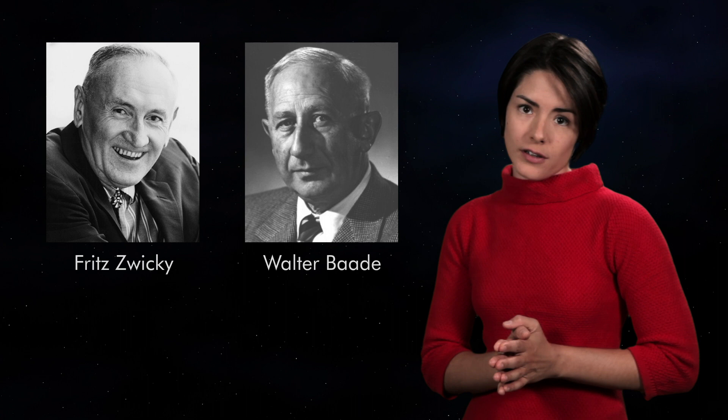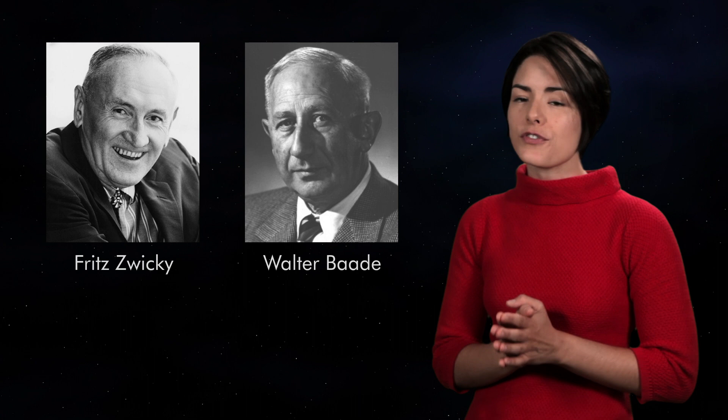Neutron stars, like the neutron, were predicted to exist before they were observed. Almost as soon as a neutron was detected, astronomers Walter Baade and Fritz Zwicky predicted that a supernova could produce neutron stars. And in 1967, a pulsating neutron star was first observed. In the decades since, many more have been discovered.